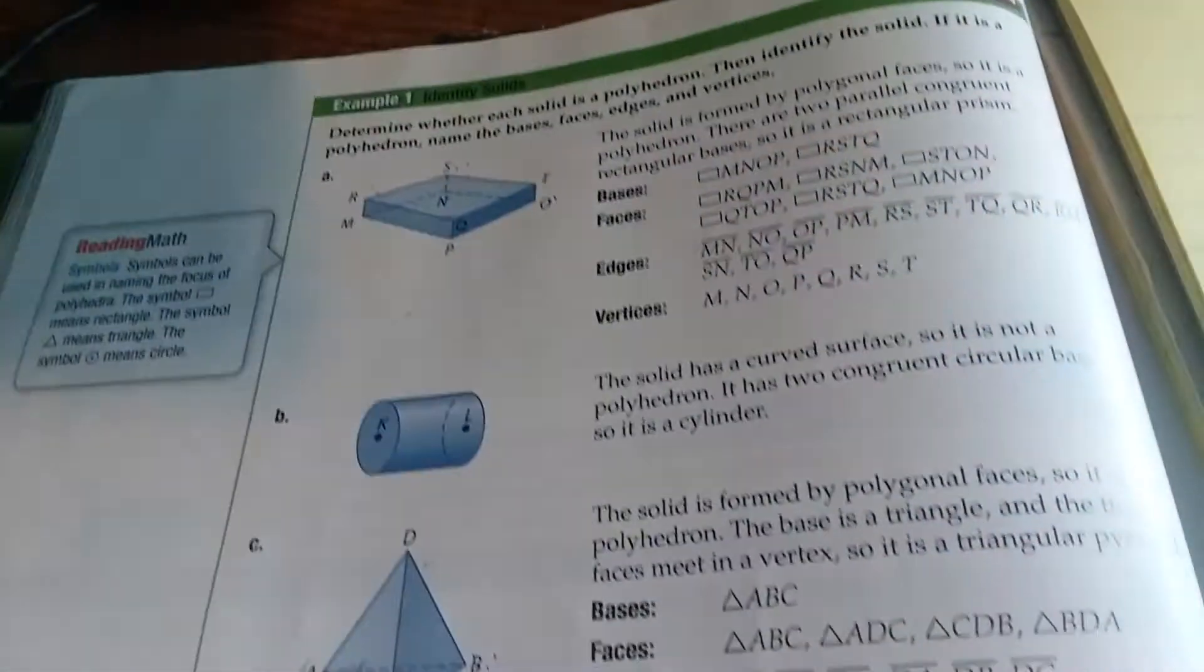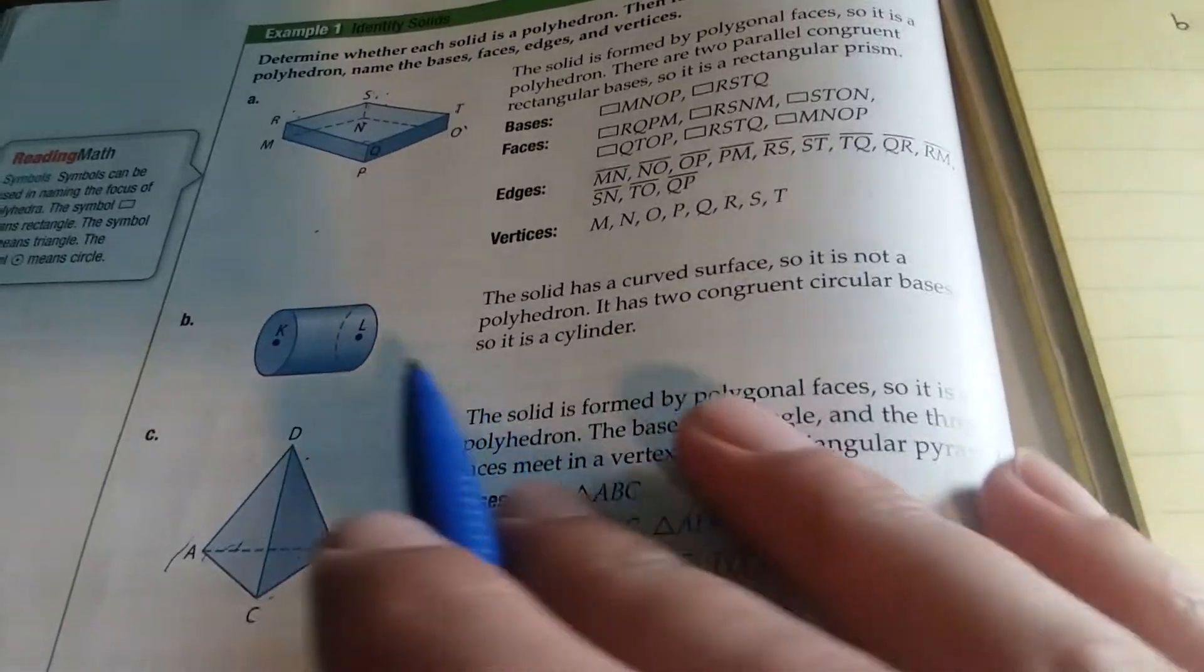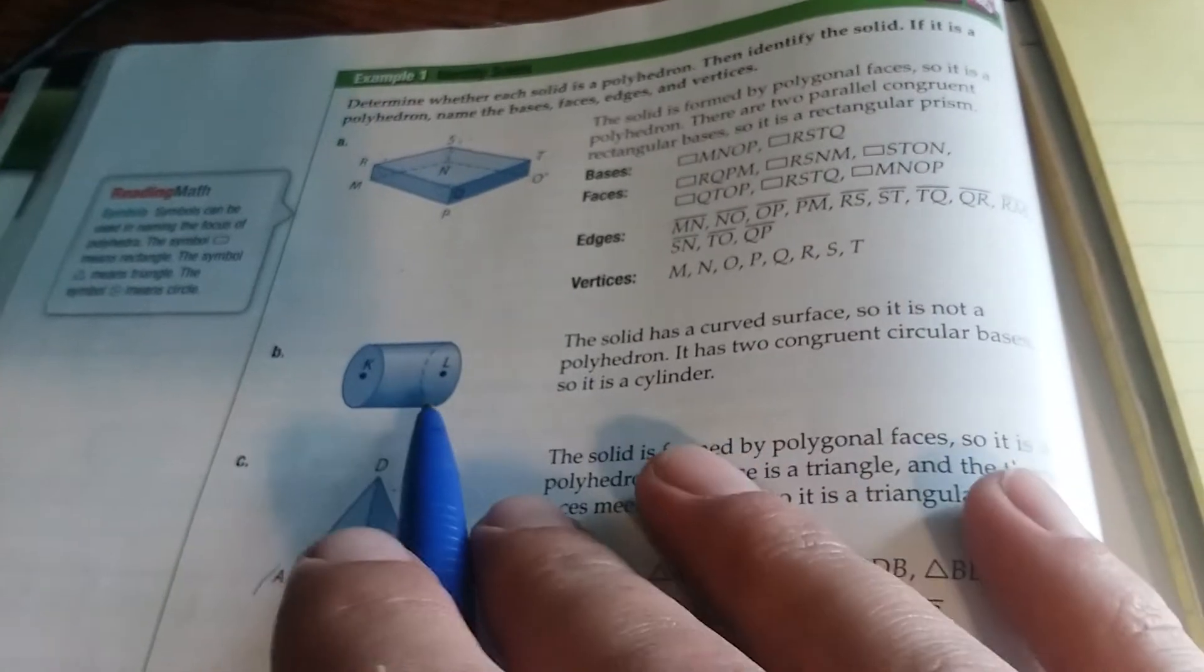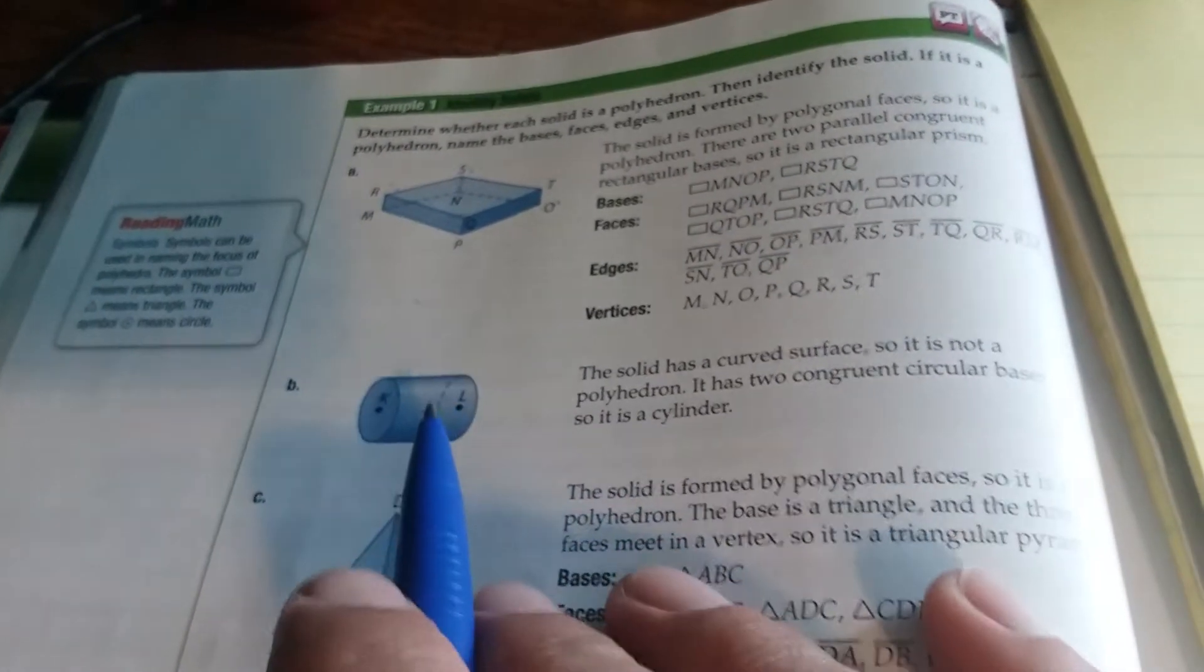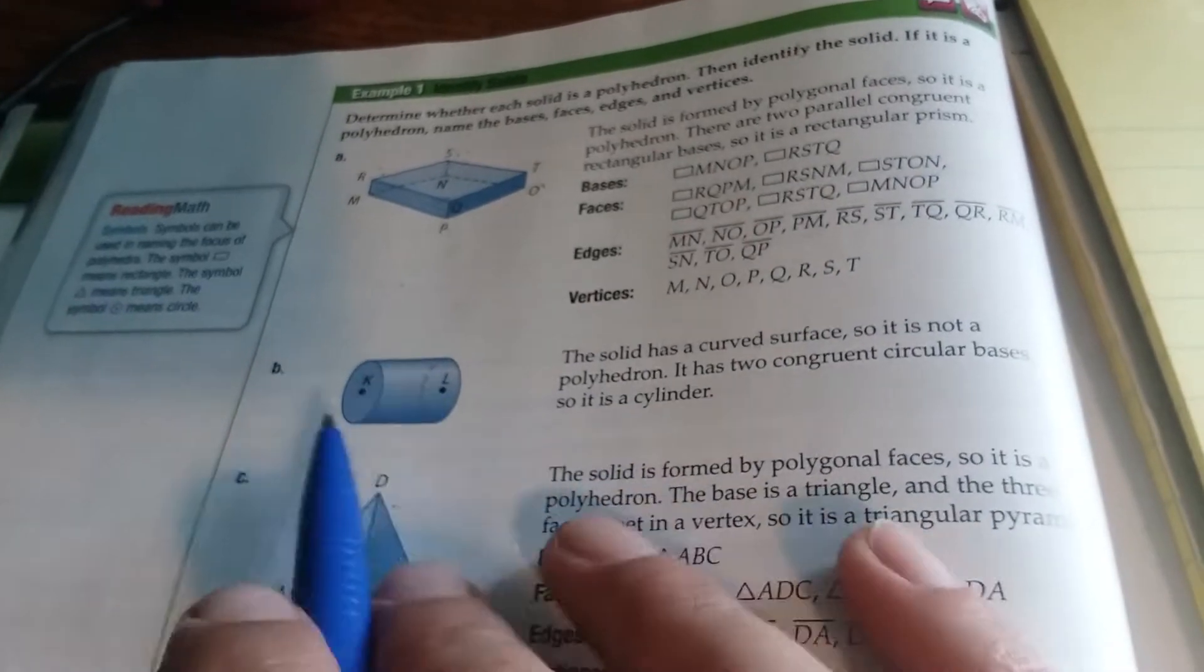Hello everyone, we're on page 68. We're going to be looking at B and C from example 1. Identify the solid. For part B, there are two curved sides, so this is not a polyhedron because we have